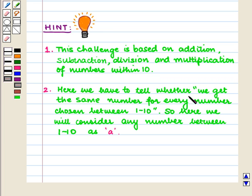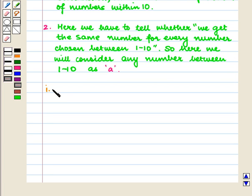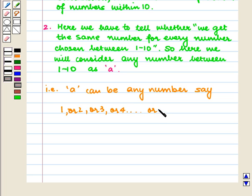Here we have to tell whether we get the same number for every number chosen between 1 to 10. So here we will consider any number between 1 to 10 as A. That is, A can be any number, say 1 or 2 or 3 or 4 and so on or 10.